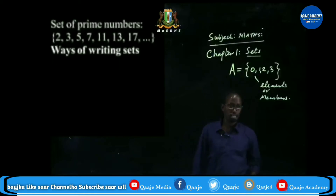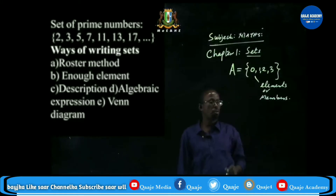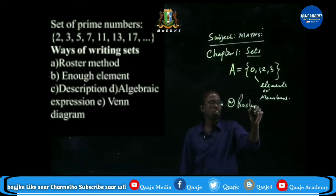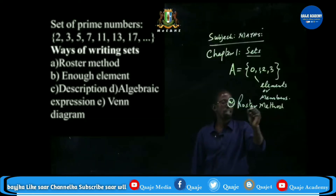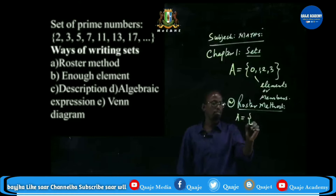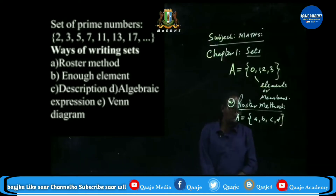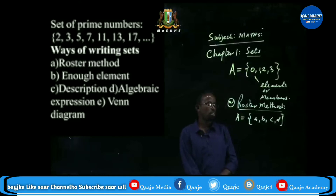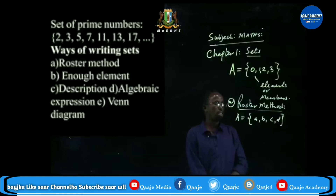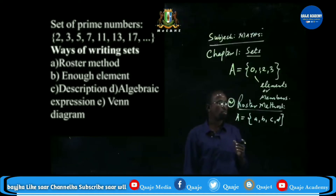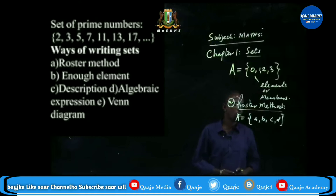Ways of writing sets: there are five types. One — we have the roster method, also called listing all elements. For example, a set {A, B, C, D}. A very good example of the roster method is the class register, where names usually start from A to Z. The order is not important. What is important is that elements should not be repeated.